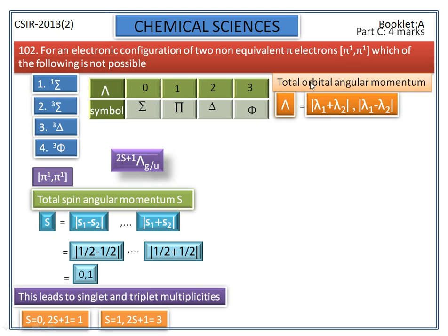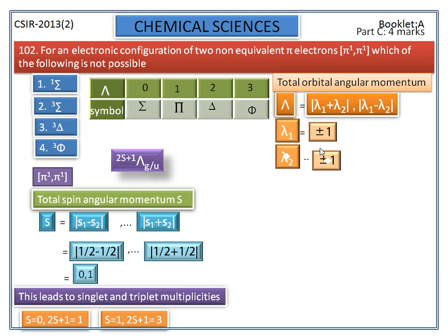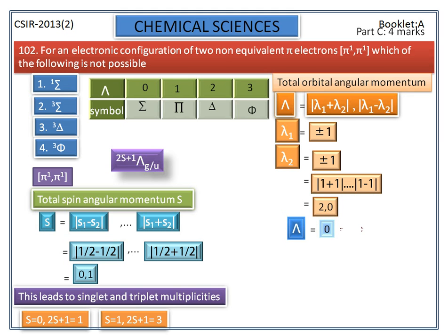We calculate the total orbital angular momentum using this formula. Since both electrons are in pi orbitals, both small lambda values are ±1. Therefore, capital Λ = 2 and 0. If Λ = 0, the term symbol is sigma; if Λ = 2, the term symbol is delta.